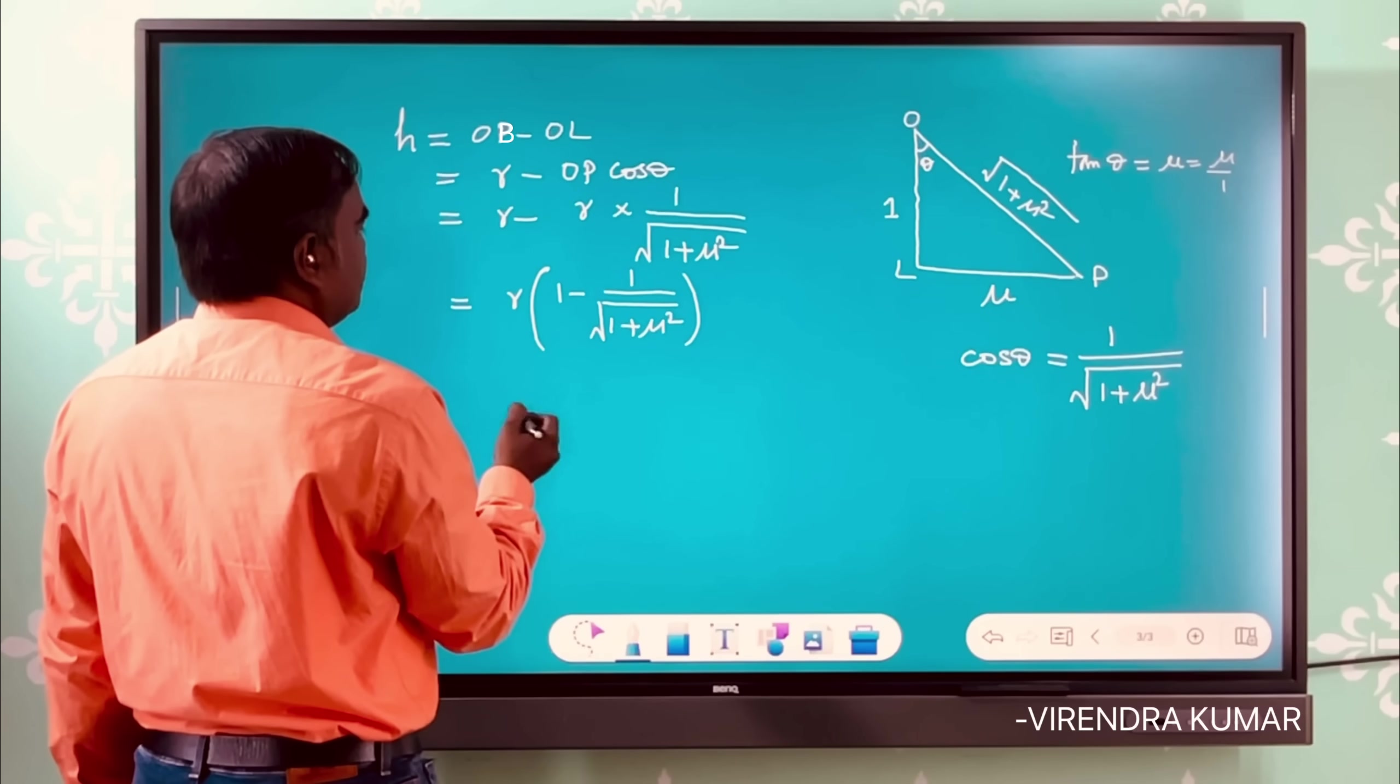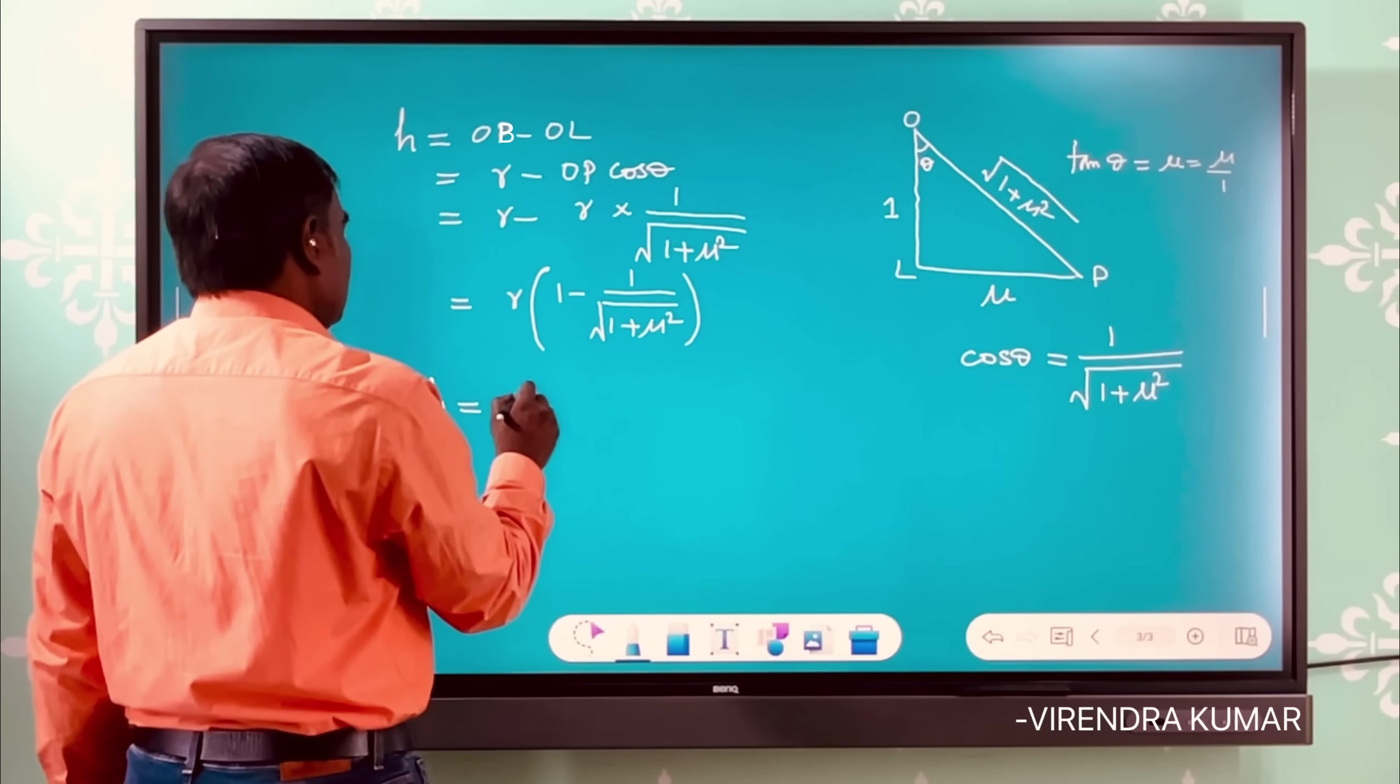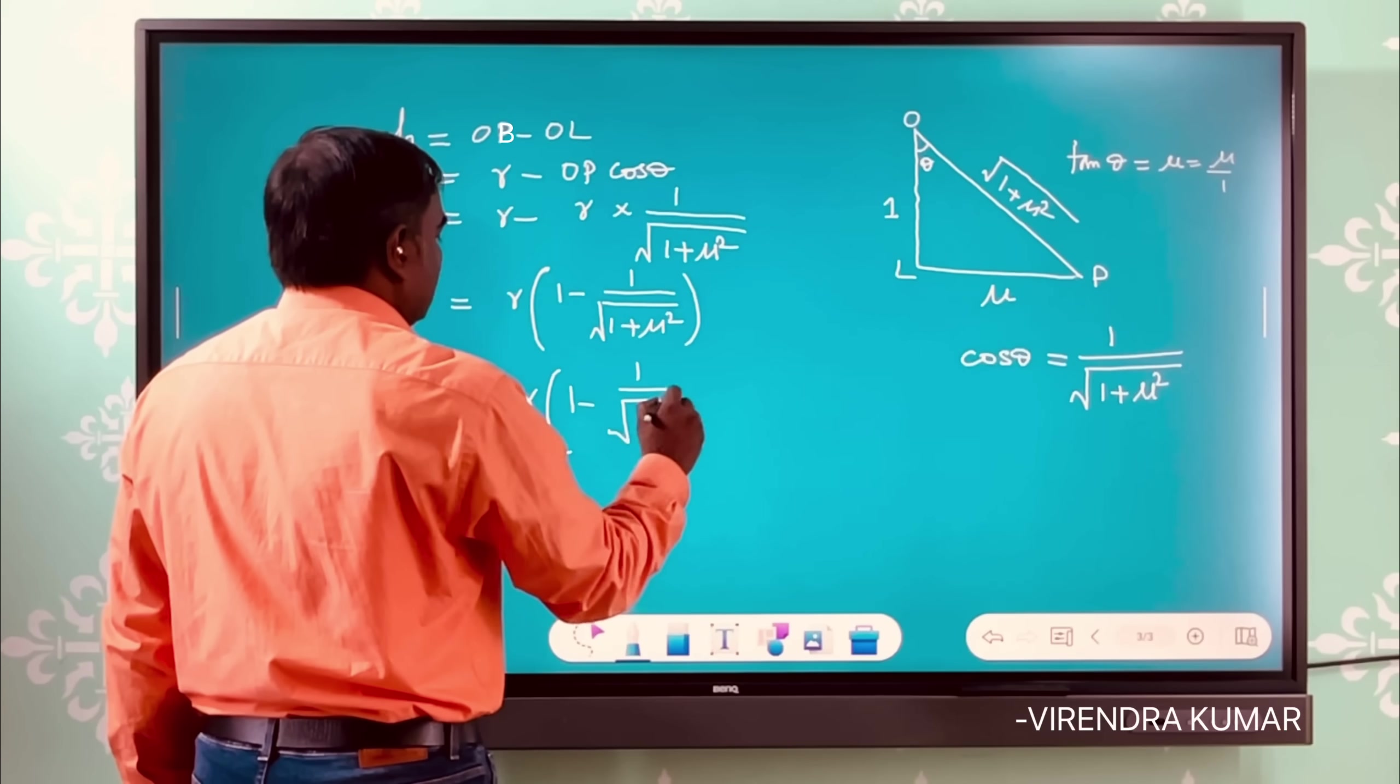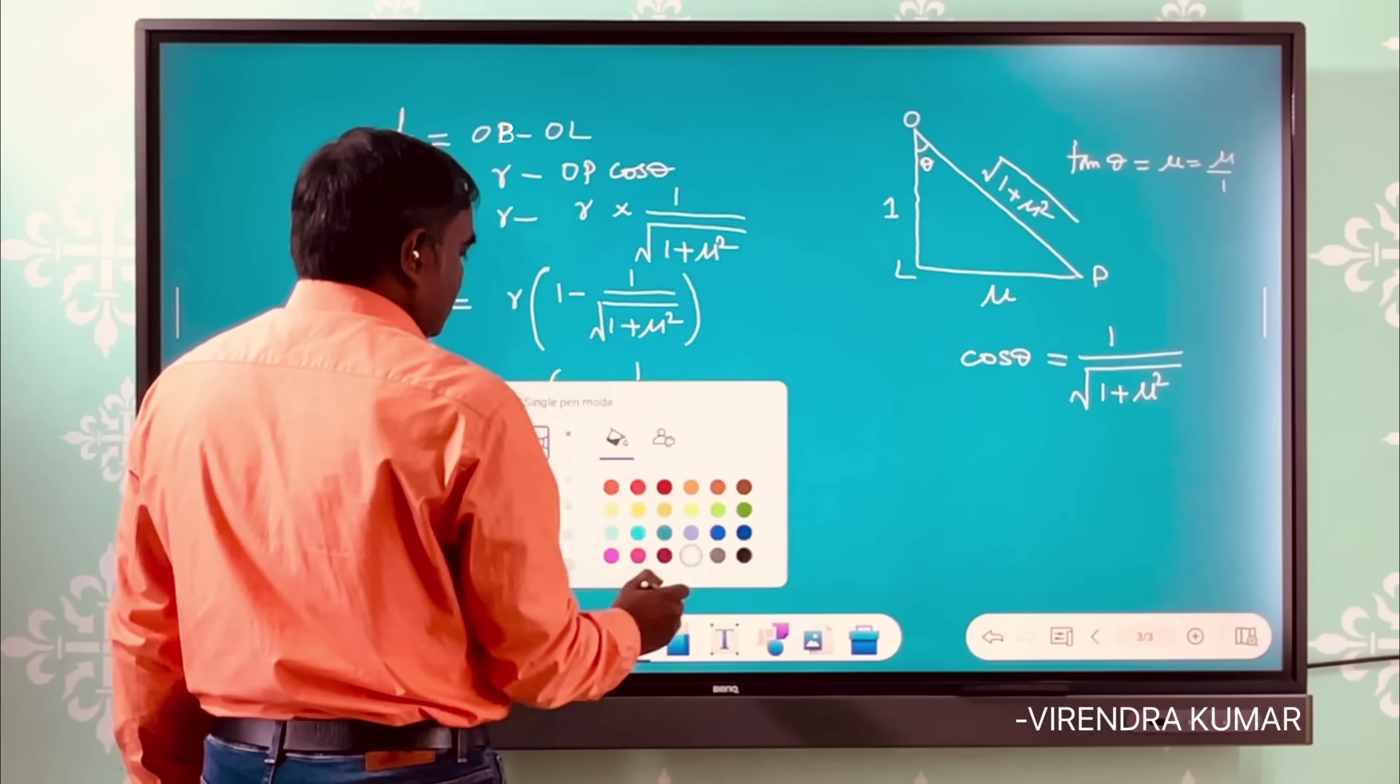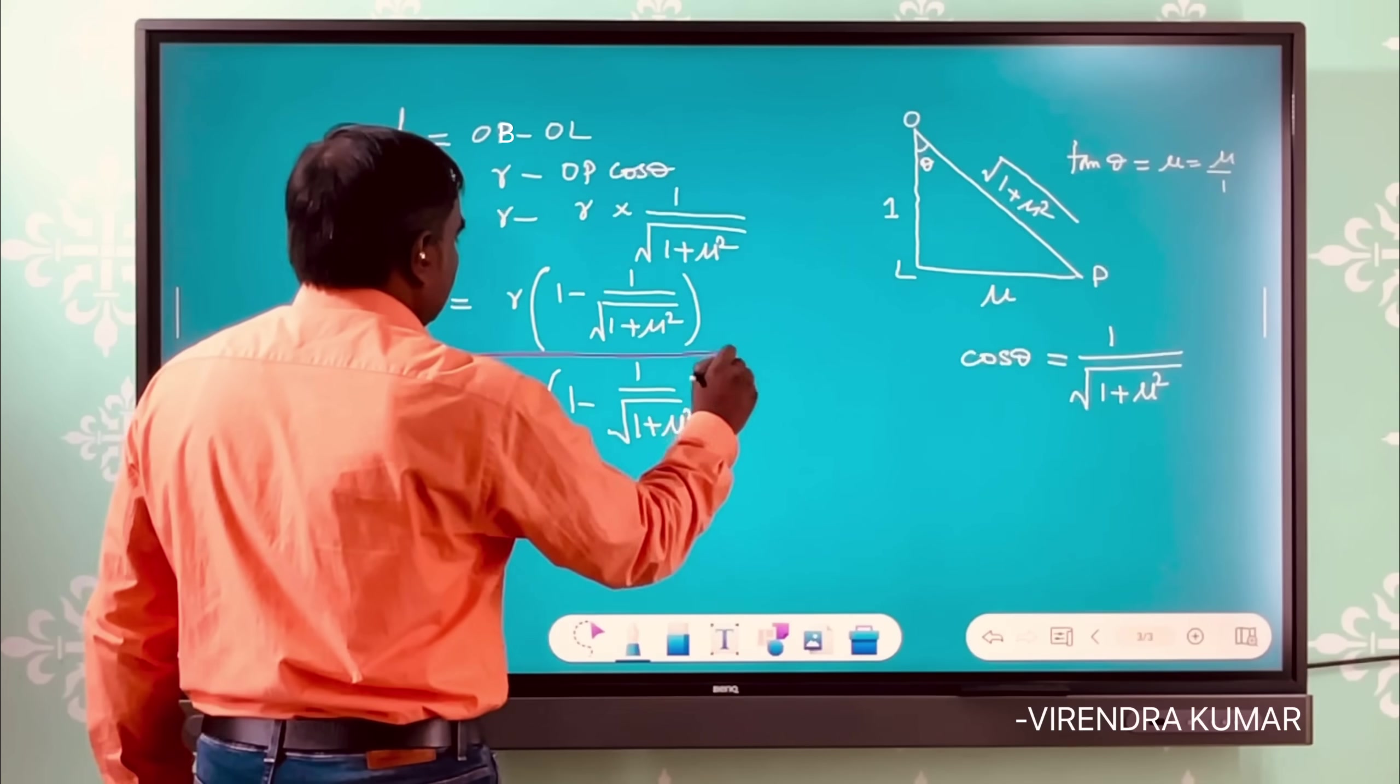So this is the expression for h equals r times (1 - 1/√(1 + μ²)). So if you are asked the value of h you can calculate this expression.